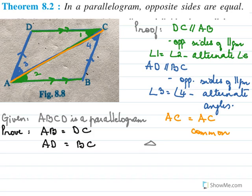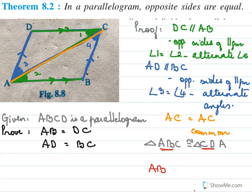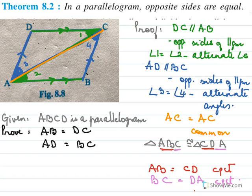So triangle ABC is congruent to triangle CDA. Now for the corresponding parts: AB equals CD by CPCT, and BC equals DA also by CPCT. So we have proved AB equals DC and AD equals BC.